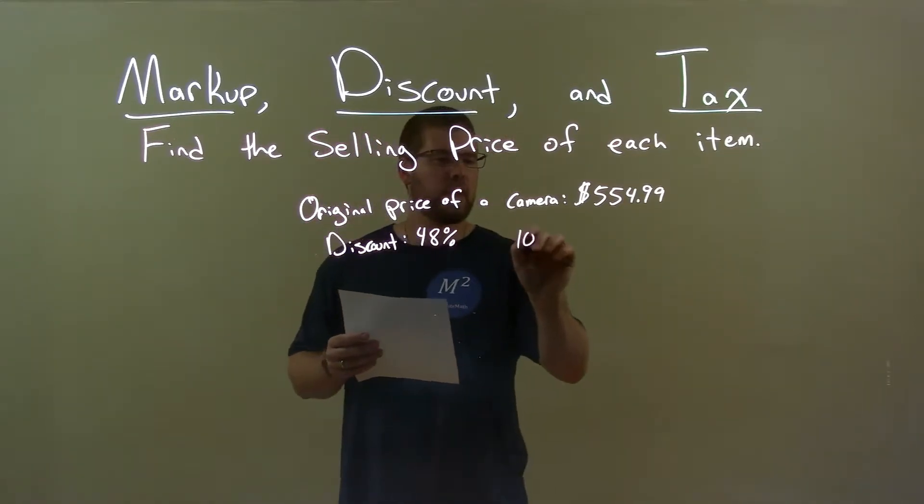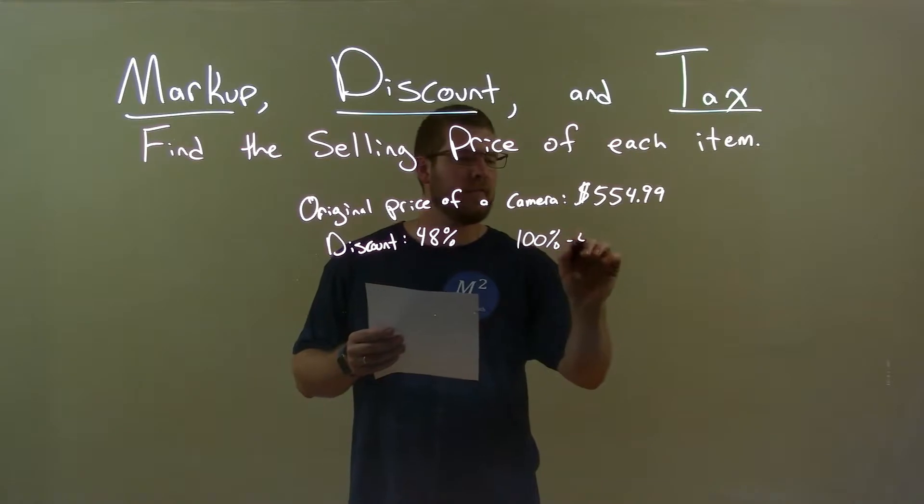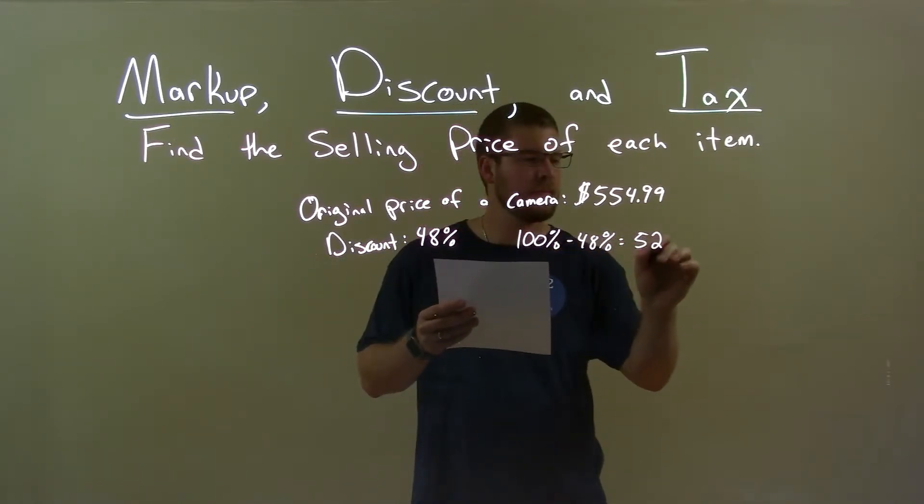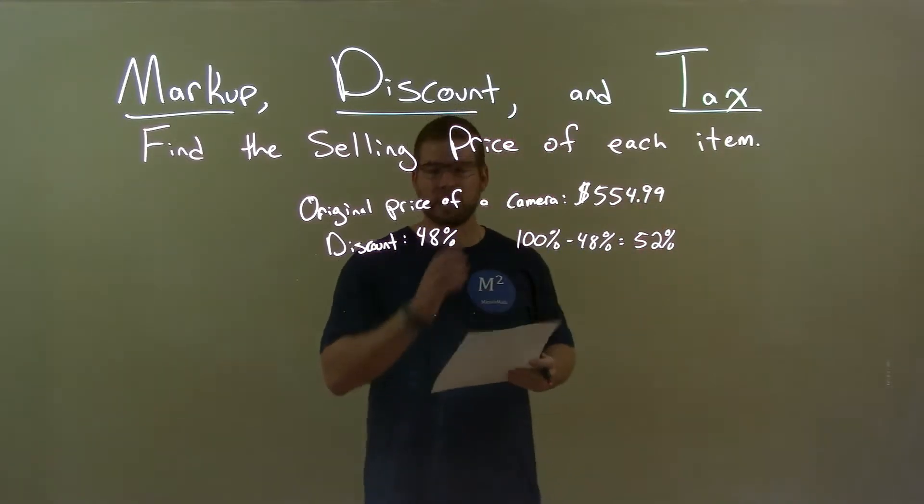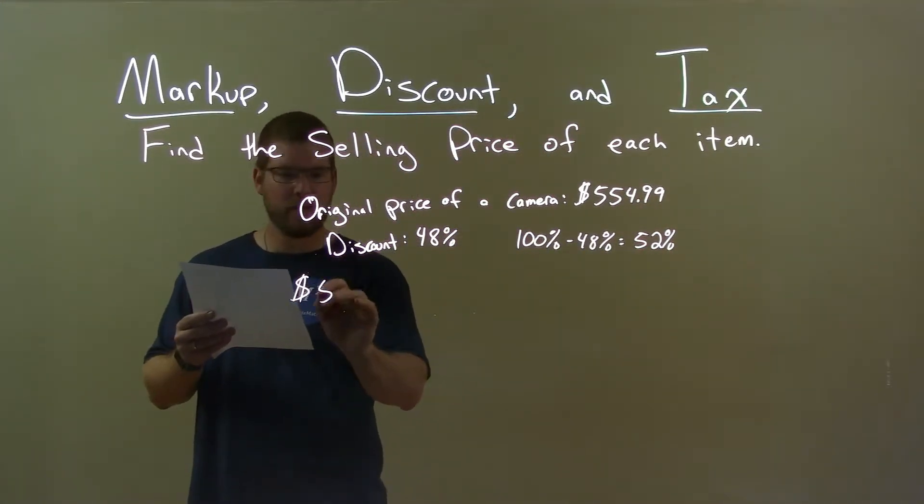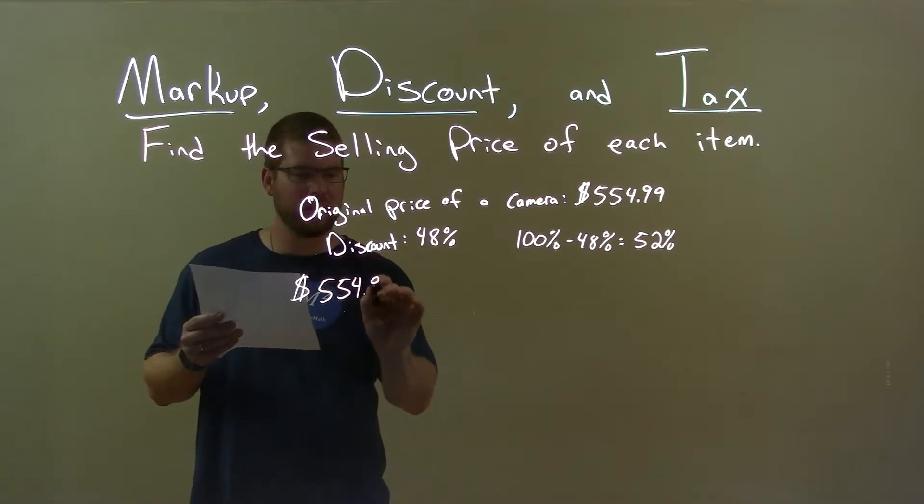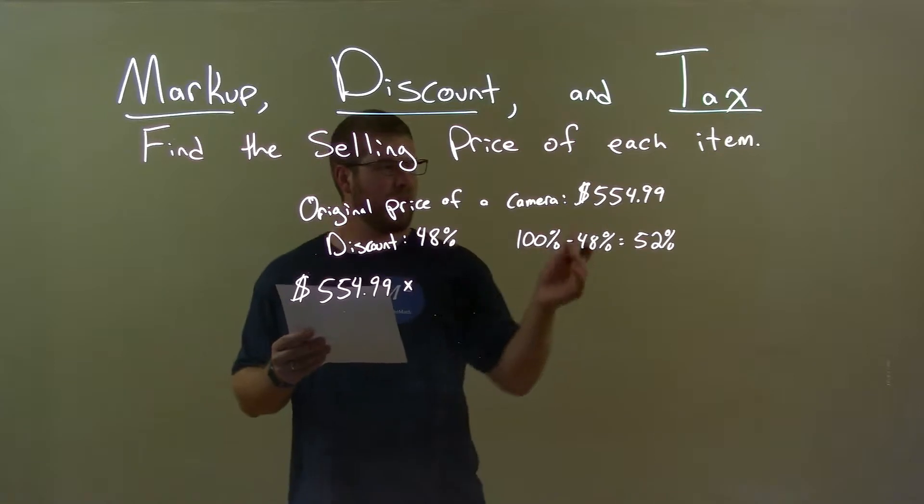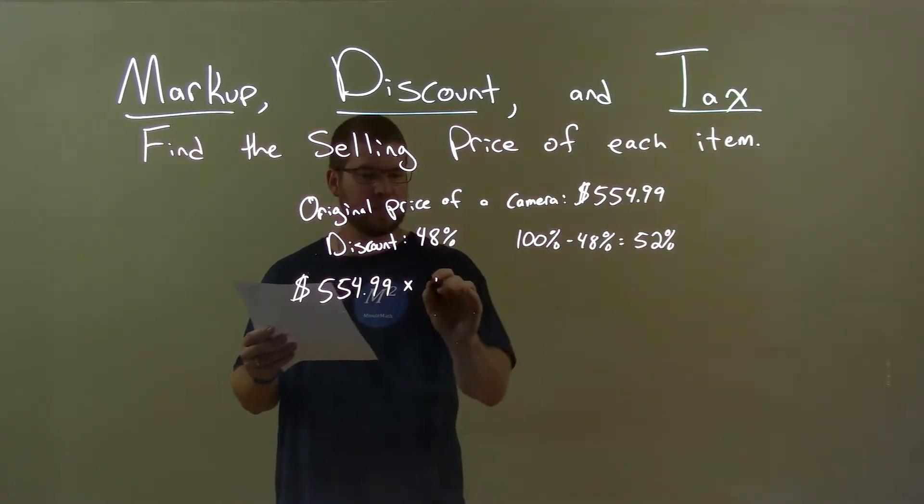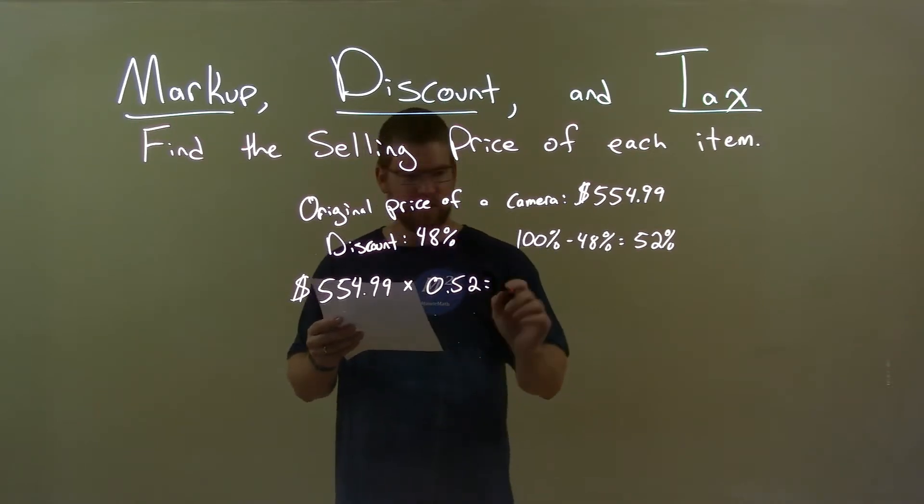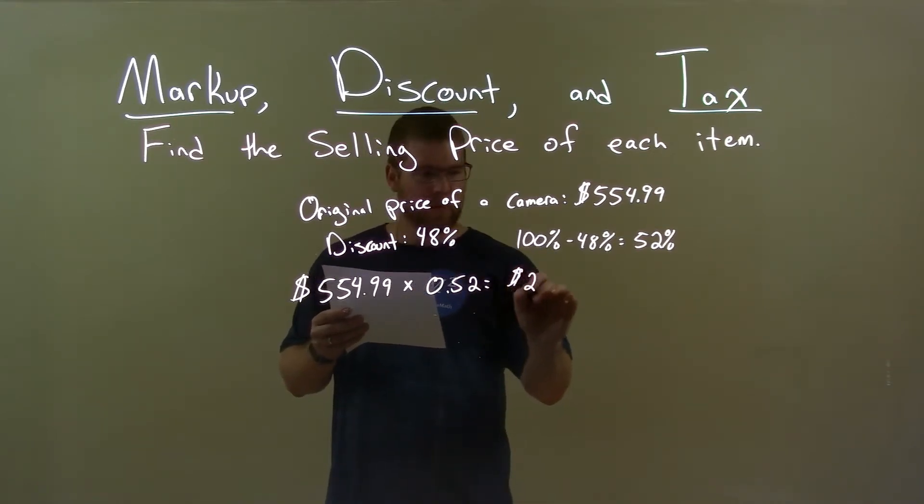Well that means if we take 100% minus that 48%, we're paying 52% of the original price. So, we take the original price of the camera, $554.99, and multiply that by 52%, which is 0.52. And that gives us a final answer of $288.59.